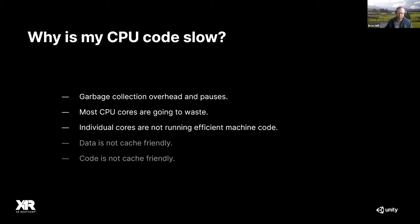Another big problem is that in classic Unity, most code runs on the main thread by default, leaving many CPU cores to waste. A typical Unity game written in MonoBehaviours runs entirely on the main thread, and you may not be utilizing other cores at all. Unity itself uses other cores for rendering and audio to some extent, but your own code sits on the main thread. Additionally, the machine code generated by standard C# compilers is generally not optimal.